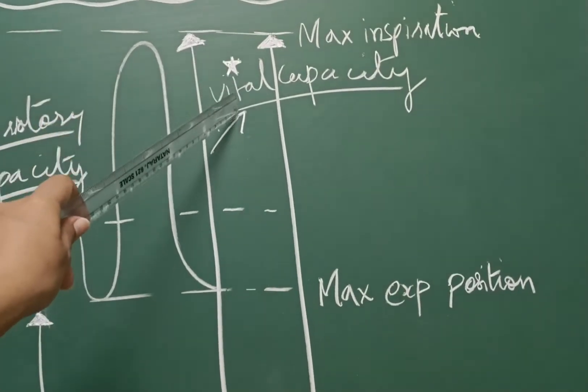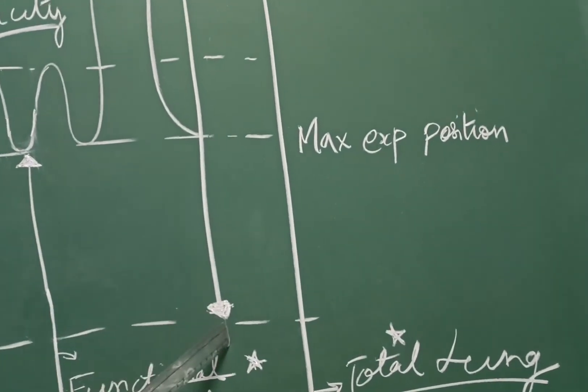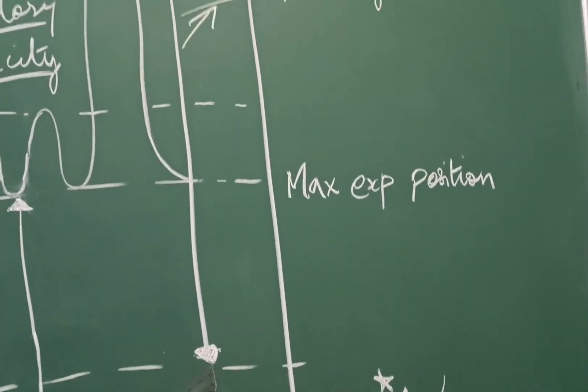Third capacity is the vital capacity, it is the maximal volume of the air which can be expelled from the lungs by forceful effort following a maximal inspiration.